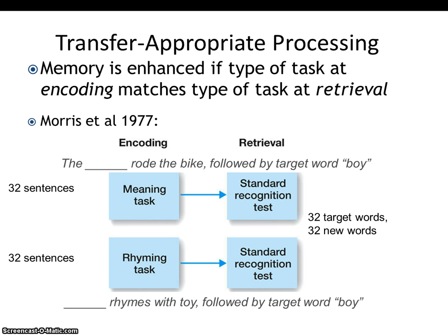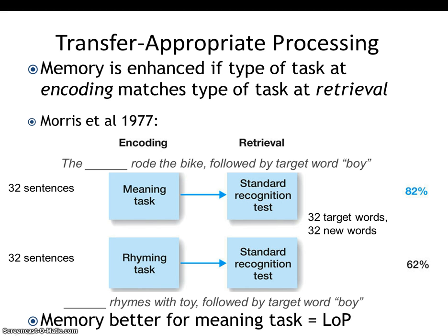The initial results showed that participants in the meaning task remembered 82% of the words correctly, while those in the rhyming task only remembered 62% correctly. So far this is a fairly standard levels of processing result — memory is better when we engage in deeper, meaning-based processing than shallower rhyming processing.